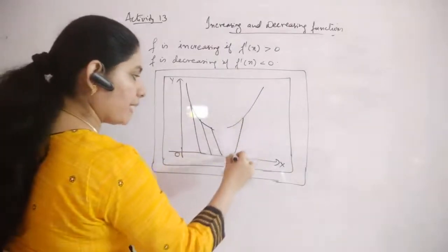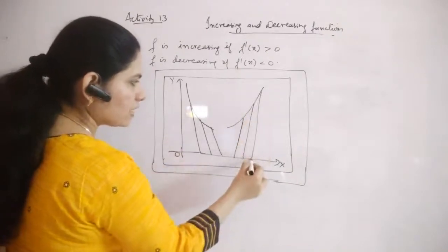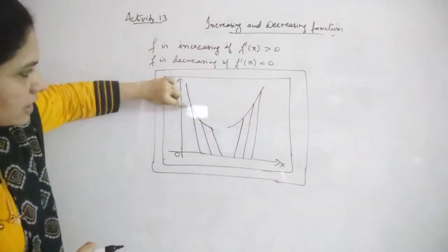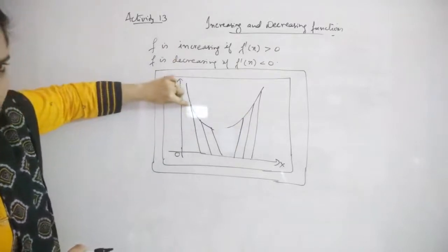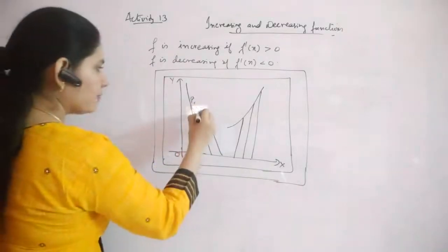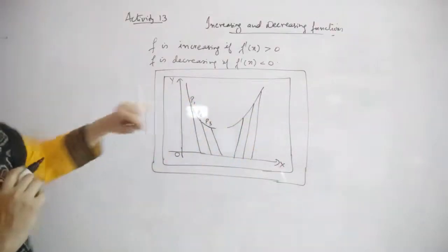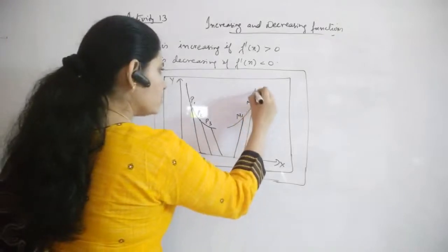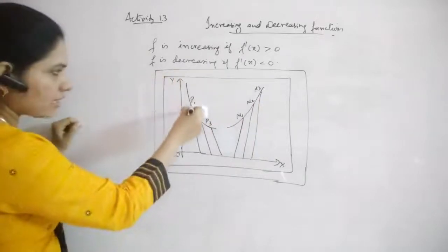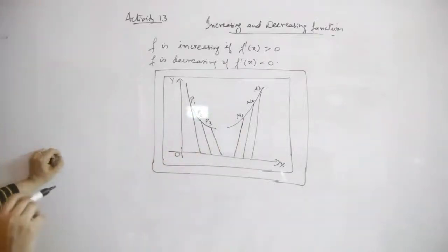On the other curve, we attach three strips making acute angles with the x-axis. Each strip touches the curve at only one point — these strips are acting as tangents. The points on the obtuse-angle curve are labeled M1, M2, M3, and the points on the acute-angle curve are labeled P1, P2, P3.